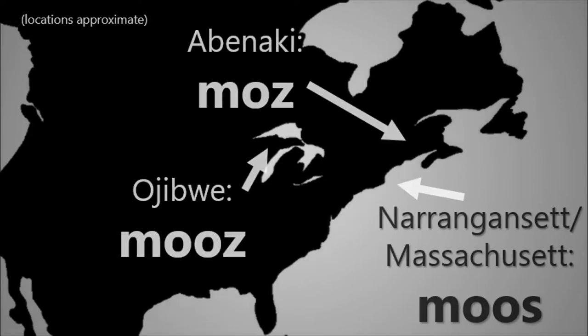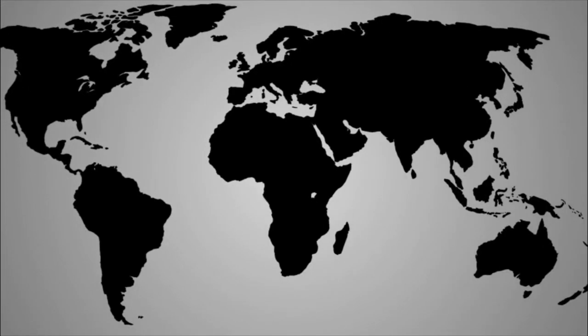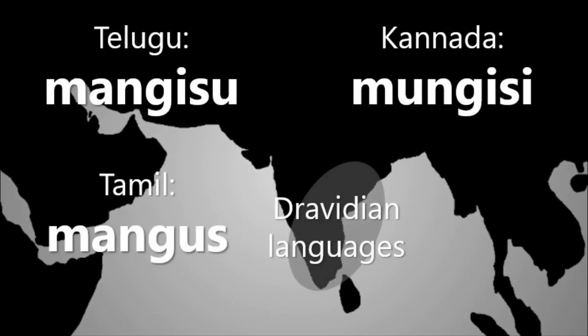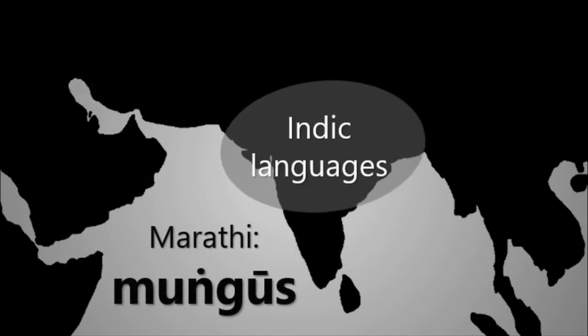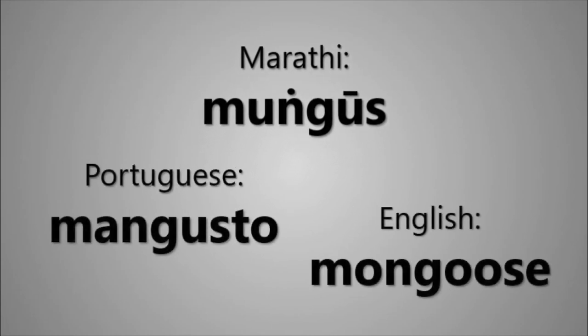The word mongoose comes from a different part of the world entirely. We can trace this word back to India. Originally, mongoose came from a Dravidian language, such as Telugu, Kannada or Tamil, and was adopted into an Indic language, such as Marathi. Europeans adopted this word into their own languages. It either came directly to English, or through Portuguese.